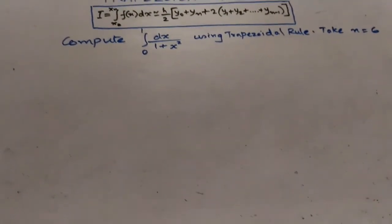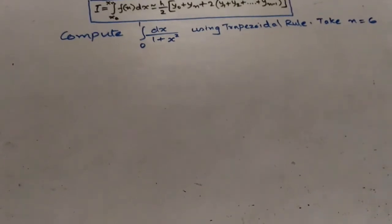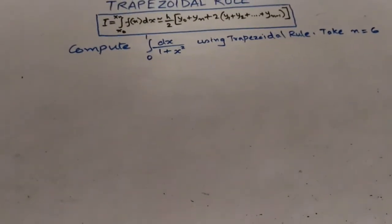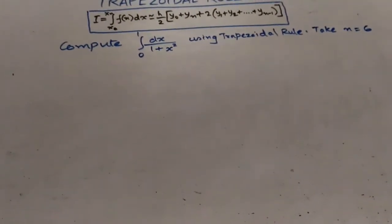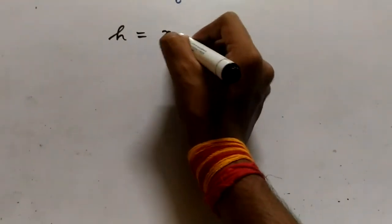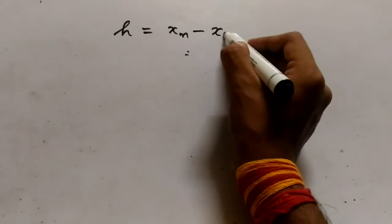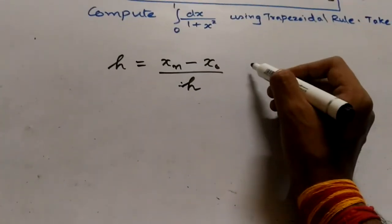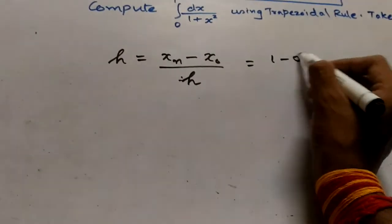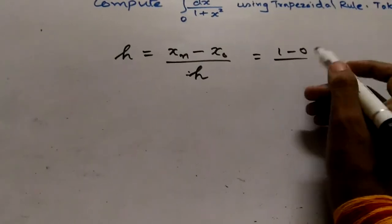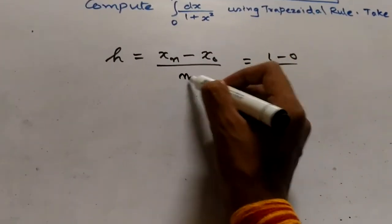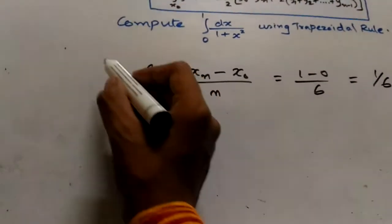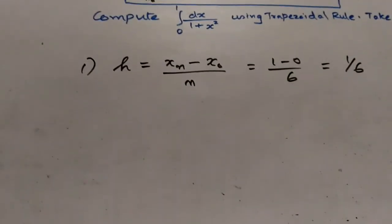To solve the problem using the trapezoidal rule, we need to follow three steps. The first step is to calculate the value of h. The value of h equals xn minus x0 divided by n. Here xn is 1 and x0 is 0, so h equals (1 - 0)/6, giving h equals 1/6.